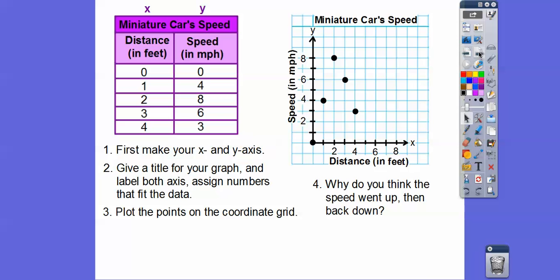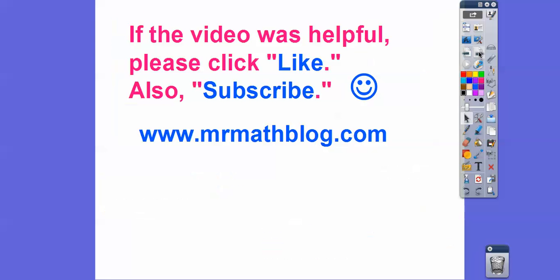One more question here. Why do you think the speed went up and then it went back down? Well, we talked about the launch. As the car is launched, like shooting a rubber band, it picks up speed and then it comes to a stop. So it starts off going fast and then it goes slower right there. If this video was helpful, I would appreciate it if you can click like and I hope you're having a fantastic year. Take care.